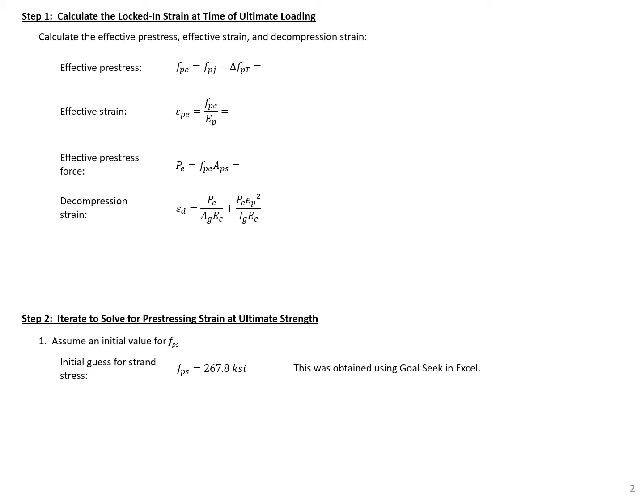Our first step is to calculate the locked-in strain at the time of ultimate loading. And we'll need to calculate a few values here. The first is our effective pre-stress. For this, we take our stress in the strand before release, 202.5 KSI, minus our total pre-stress losses, 35 KSI, which will give us an effective pre-stress here of 167.5 KSI.